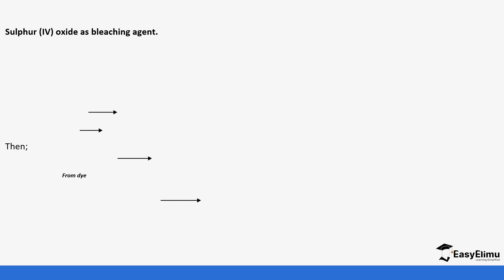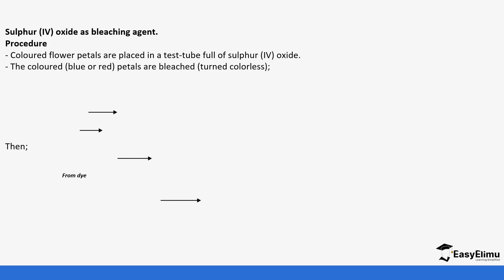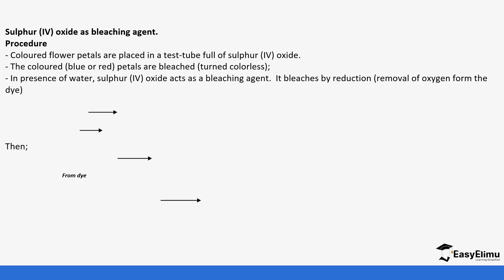Sulfur dioxide also acts as a bleaching agent. For example, if you put colored petals in a beaker or gas jar containing sulfur dioxide, the petals will be bleached — they turn colorless. The reason they turn colorless is that there is water present in the petals (or you can sprinkle some water). The water reacts with sulfur dioxide to form sulfurous acid, and this sulfurous acid bleaches by reduction — it takes away oxygen from the dye in the petals.